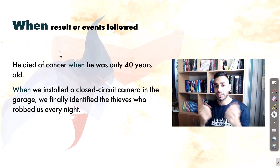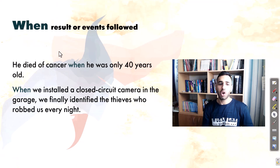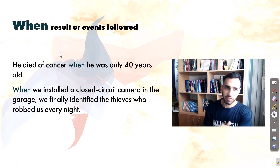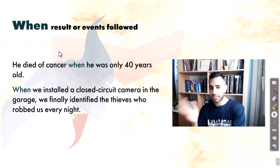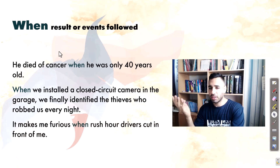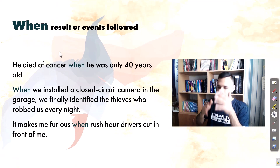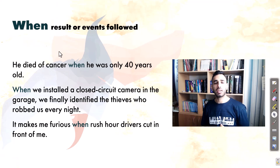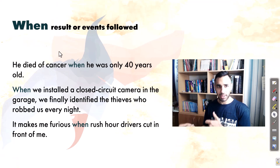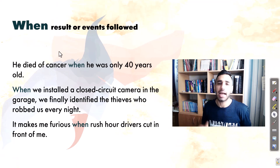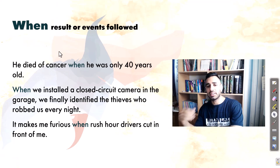'When he installed a closed-circuit camera in the garage, we finally identified the thieves who robbed us every night.' The second clause follows from and is the result of the action in the first clause. Another example: 'It makes me furious when rush-hour drivers cut in front of me.' I'm driving and suddenly rush-hour drivers cut in front of me, and as a result I become very angry — my fury is the result of their action.